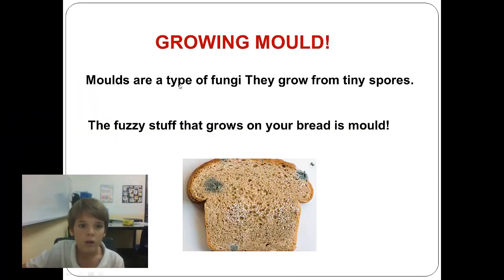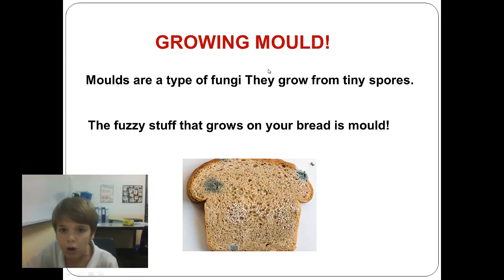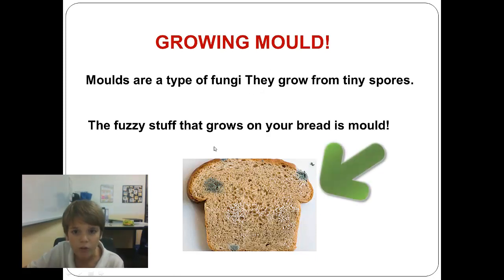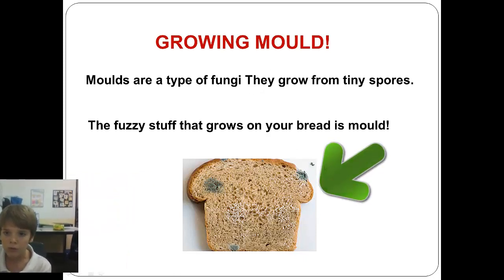Grow and mould. Moulds are a type of fungi. They grow from tiny spores. The fuzzy stuff that grows on your bread is mould.